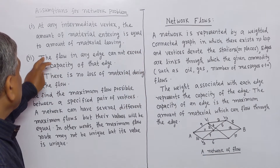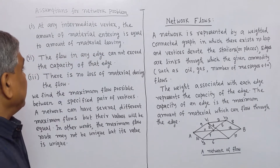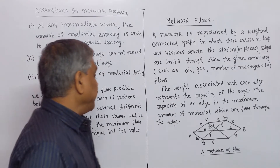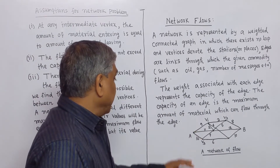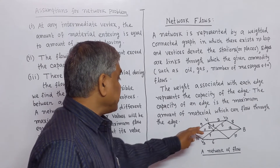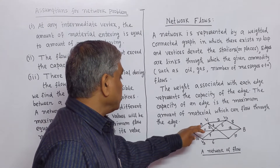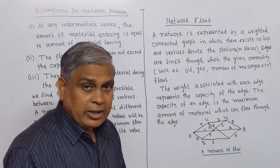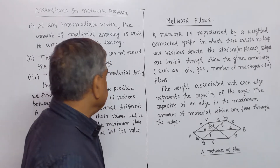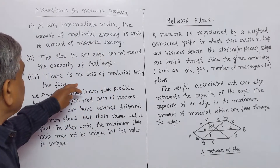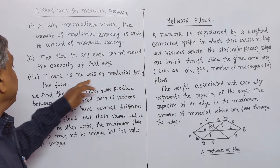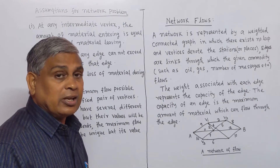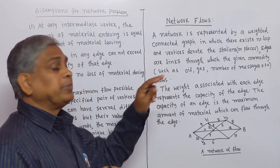Number 2: The flow in any edge cannot exceed the capacity of that edge. For example, if the capacity of this edge is 9, then more than 9 units of commodity cannot flow through it. Number 3: There is no loss of material during the flow — we do not incur any loss during the flow of the material.